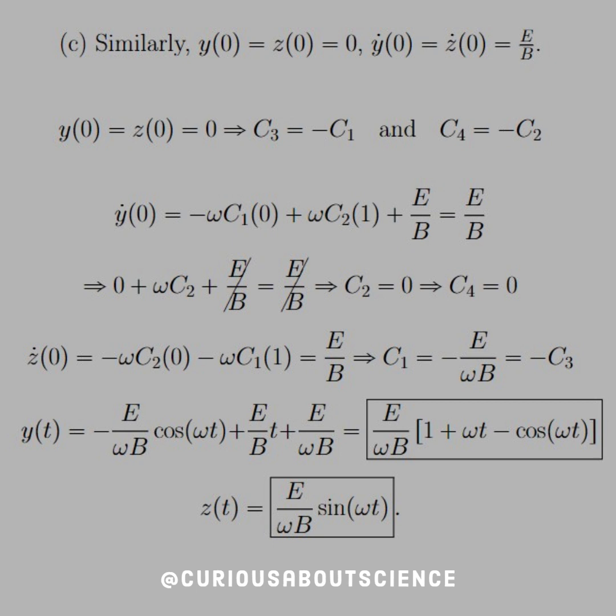But in the z direction, that's not true. We see here that c1 equals negative e over omega b equals negative c3. So plug those in, we factor out an e over omega b, and simplify that down. The z equation is pretty simple, we like that.